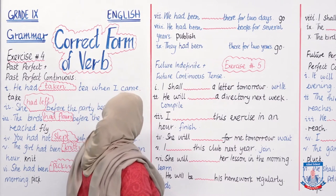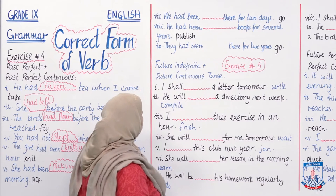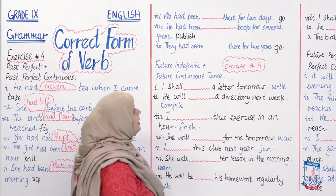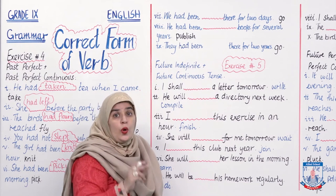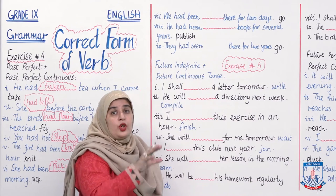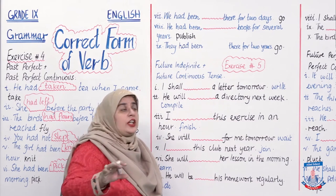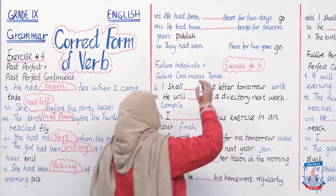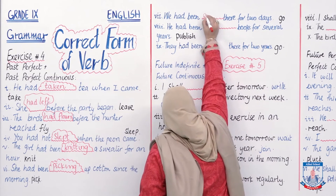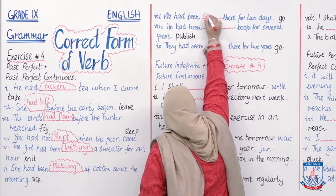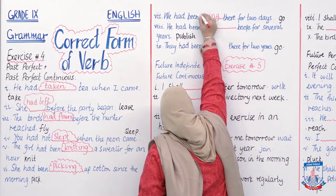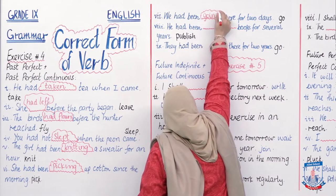'We had been ___ there for two days.' Kuch kaam jo aap do din se karte chale ja rahe ho. Answer: 'We had been going there for two days.'